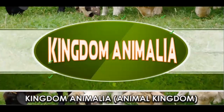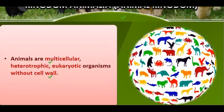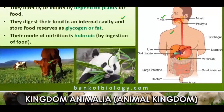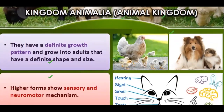In Kingdom Animalia, animals are multicellular, heterotrophic, eukaryotic organisms without a cell wall. They directly or indirectly depend upon plants for food. They digest food in an internal cavity and store food reserves as glycogen or fat.